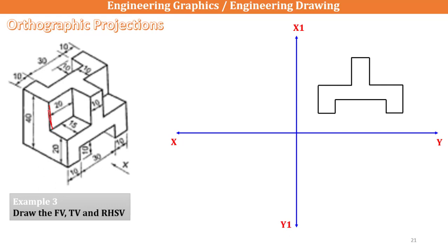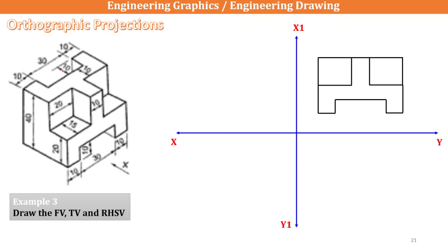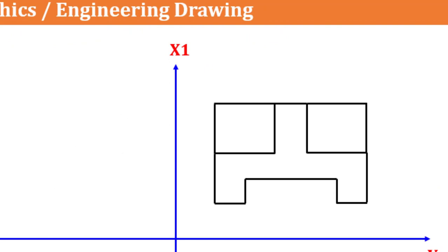This edge is also visible to us, this edge is also visible to us — these edges are all visible to us and those things we have to represent. This will be 20 by 20, and again the same here — 20 by 20. So I will draw a line of 20mm, draw a closed box of 20mm, similarly draw a line parallel to XY and again a line parallel to X1Y1. This completes the main visible outline. Also, you can see a hole here — at 10mm distance and 30mm distance — so this hole we also have to represent, indicating there is a hole in this particular plane.